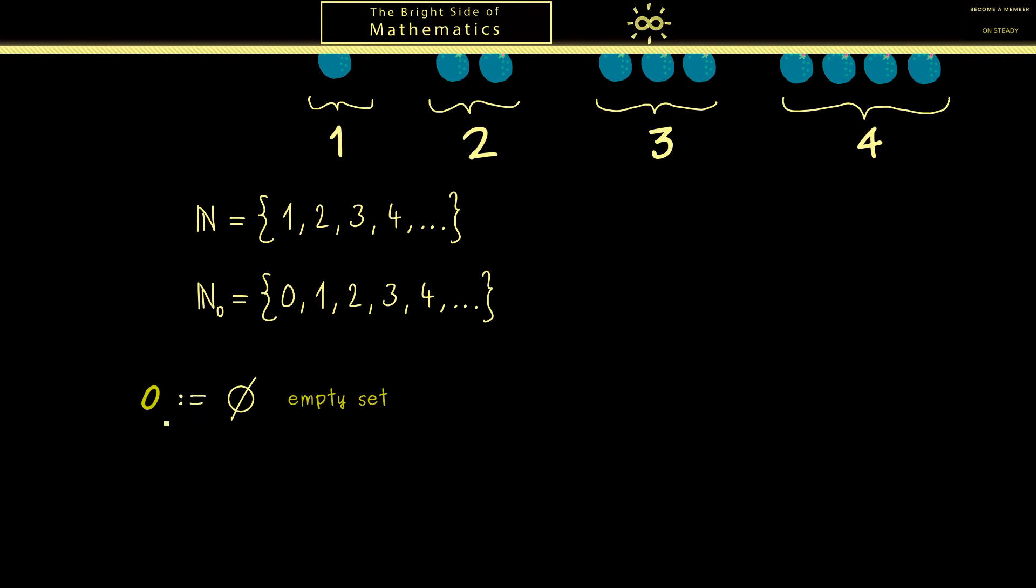Maybe it looks a little bit strange here but keep in mind we already have the set theory so it makes sense that every new object we introduce should also be a set. We did the same thing when we introduced ordered pairs and maps.